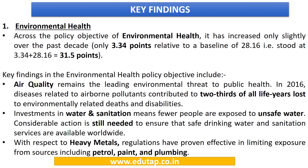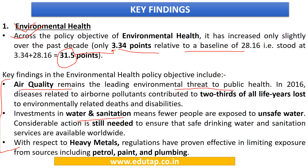The policy objective of environmental health has a score of 31.5 points, an increase of 3.34 points compared to baseline. Among its issue categories, air quality is the biggest threat to public health. Water and sanitation require more efforts, and regulations pertaining to heavy metals are quite impactful in limiting exposure from petrol and paint.